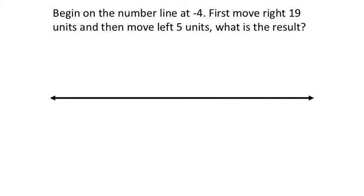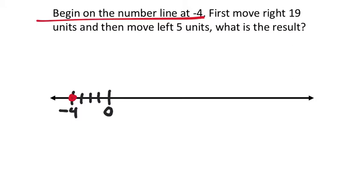So here we go: begin on the number line at negative 4, first move right 19 units, and then move left 5 units — what is the result? I'm going to show this a couple different ways. First let's find negative 4 on this number line. We put 0 over here because we're moving to the right a big number, but there are 1, 2, 3, 4 negatives. When it says begin at negative 4, this is where I would start. For this number line on the assignment, all you've got to do is state where it ends.